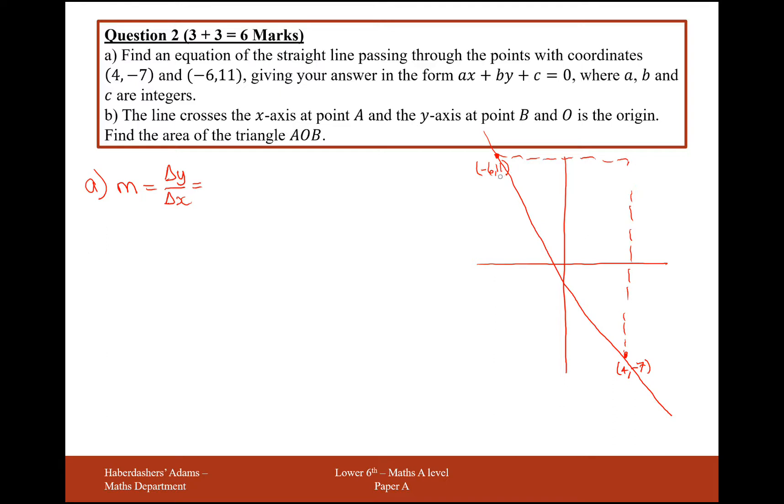On the y coordinates, I've gone from 11 up here down to -7 here, so I've gone down by 18, if I'm going from this point to this coordinate. And on the x coordinates, I've gone from -6 to 4, so I've gone to the right by 10. So my gradient here is going to be -9/5 if I simplify that fraction.